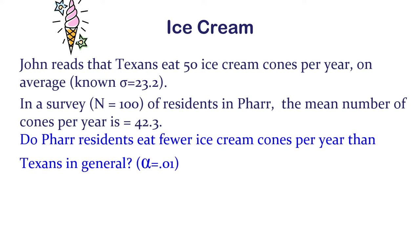Let's say alpha equals 0.01 and ask: do far residents eat fewer ice cream cones per year than Texans in general? This is clearly a directional hypothesis, but let's fudge it and cram it into a two-tailed mold so we can go through the process without too many extra fussy details.